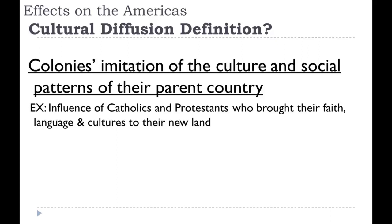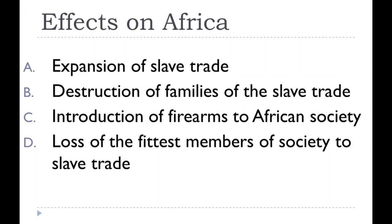In Africa, the slave trade kept growing and families were destroyed. Europeans introduced firearms to African society, which actually enabled more slave trade — those selling slaves now had guns and could go capture other tribes to sell them in exchange for more goods and power. Many of the fittest members of African society were lost to the slave trade, since Europeans only wanted to buy the strong ones who could work, or younger women who could have children to produce more slaves.